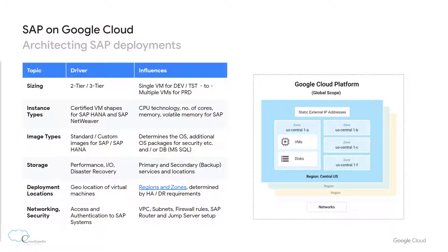Image types, where the standard or custom SAP images decide the software and additional OS packages for security and database. Storage, where the performance, input-output, and disaster recovery requirements decide the primary and backup storage services and locations. Deployment locations, where the required geo-location of the VMs and the high availability and disaster recovery requirements decide the regions and zones of the VMs. Lastly, the network and security, where the VPC subnets and firewall rules are configured according to the access and authentication requirements of the SAP system.